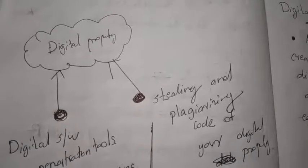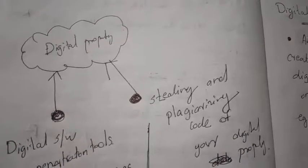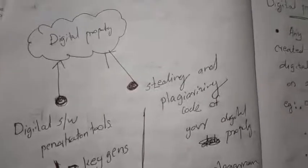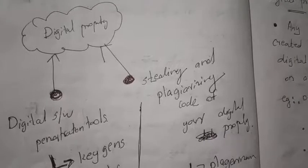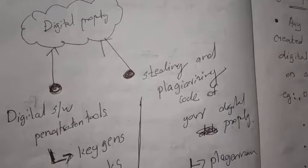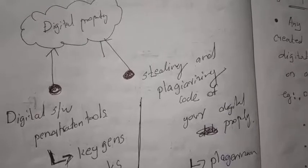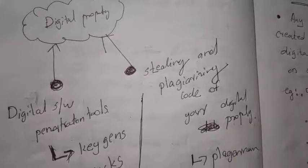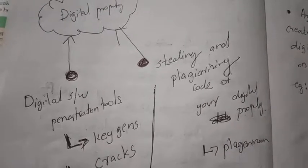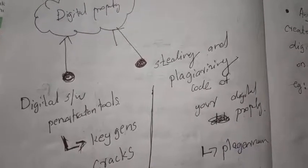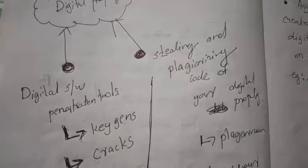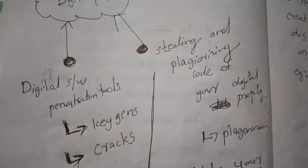Threats are mainly: first, digital software penetration tools; and second, stealing and plagiarizing code of your digital property. By using different types of penetration tools — there are many softwares available to take your data — hackers use these tools to penetrate your account and take your personal data. Two examples are key generators and crackers.